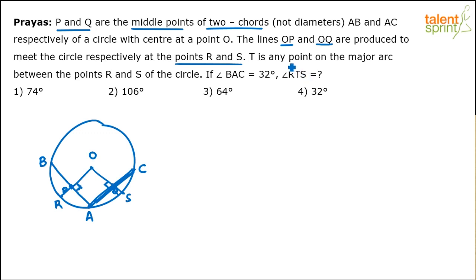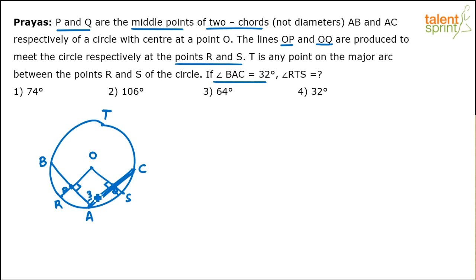T is any point on the major arc between points R and S. There is a minor arc RS and a major arc RS. T is any point on that major arc. Angle BAC is 32 degrees — so this angle at vertex A is 32 degrees.